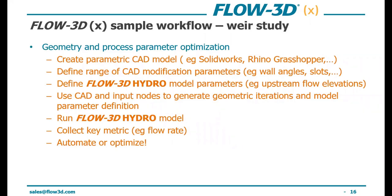As a generic example, consider a weir study. You could create an automated rating curve by simply feeding a list of upstream elevations and collecting corresponding flow rates. Or for geometry optimization, you'd include geometric parameters: create a parametric CAD model, define the range of CAD modification parameters, define the Flow3D Hydro model parameters, use CAD and input nodes to generate geometric iterations, run the model, collect key metrics, and then choose to automate or optimize.